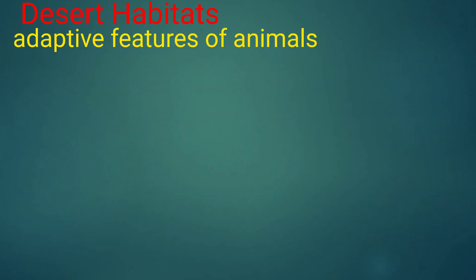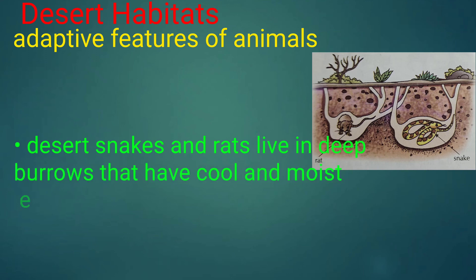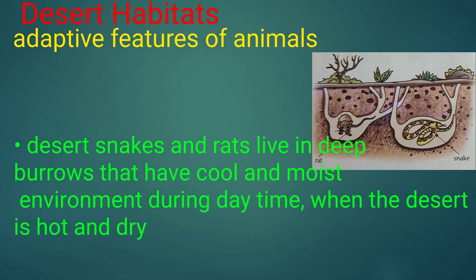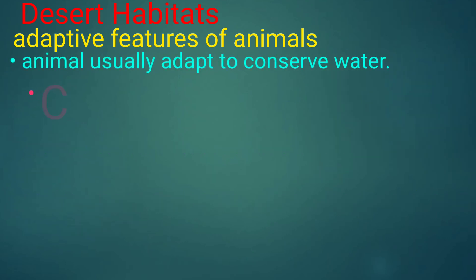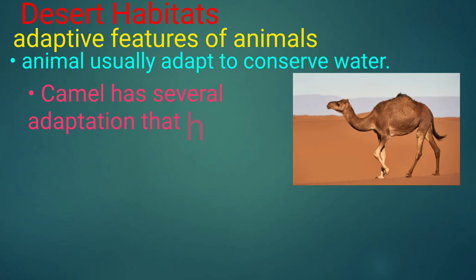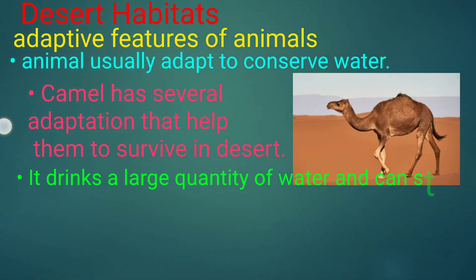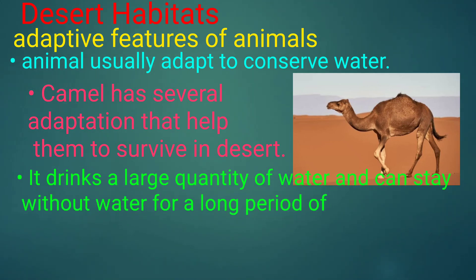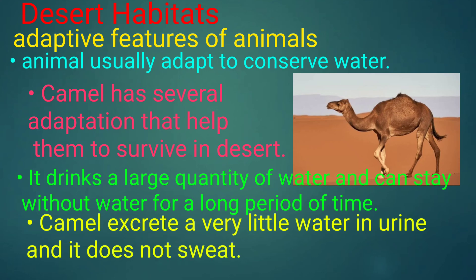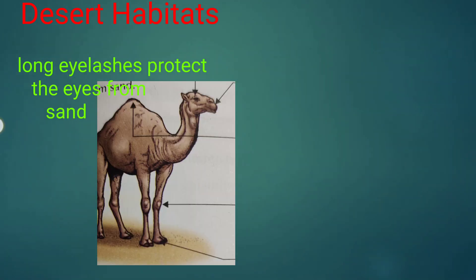Adaptive features of animals in desert: Desert snakes and rats live in deep burrows that have a cool and moist environment during the day when the desert is hot and dry. Animals usually adapt to conserve water. Camel has several adaptations that help them to survive in desert. It drinks a large quantity of water and can stay without water for a long period of time. Camels excrete very little water and do not sweat.